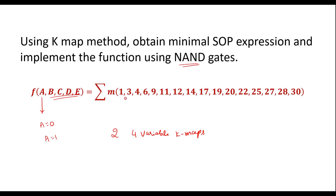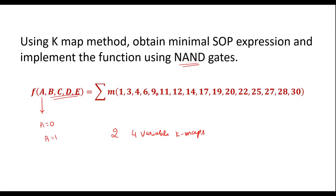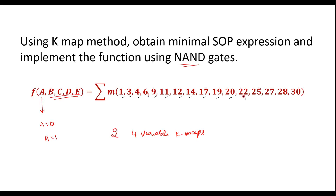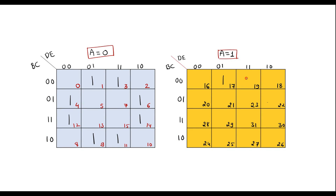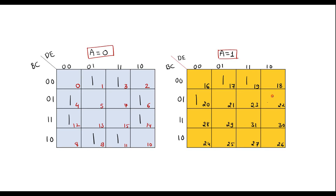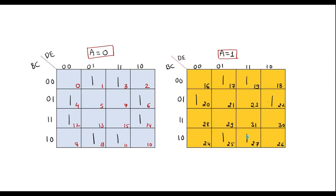These are the decimal minterms — in these cell numbers we write 1. So that is 1, 3, 4, 6, then 9, 11, 12, 14, then 17, 19, 20, 22, then 25, 27, 28, and 30.